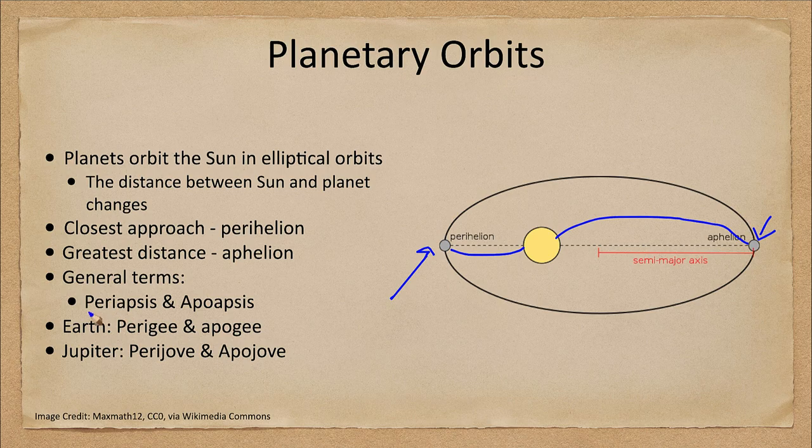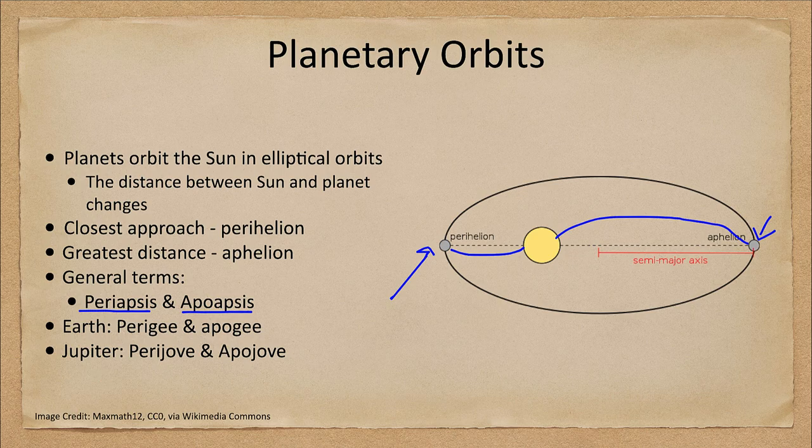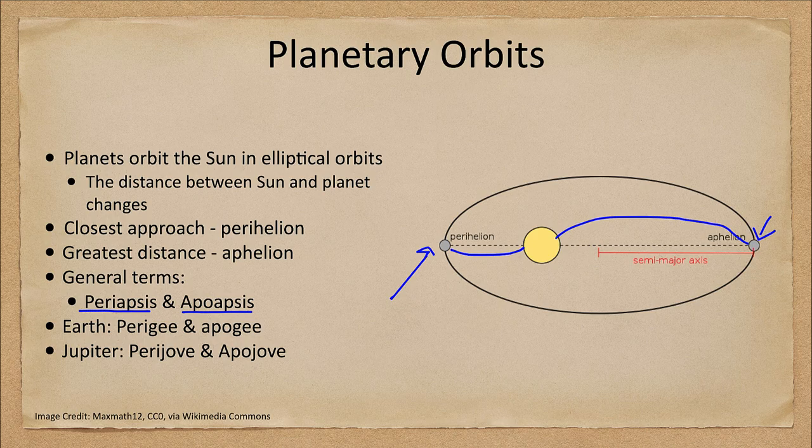Now the general terms for these are periapsis and apoapsis. That applies to any object. If you're just talking about an orbit, we use the general terms periapsis and apoapsis.